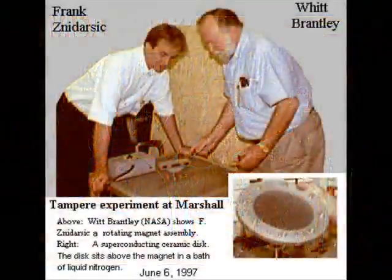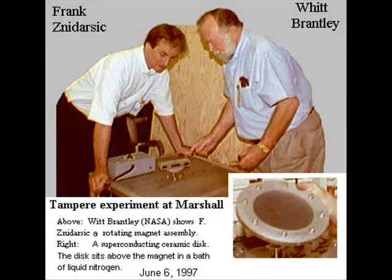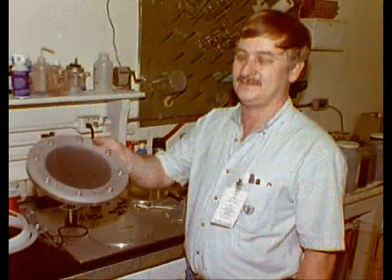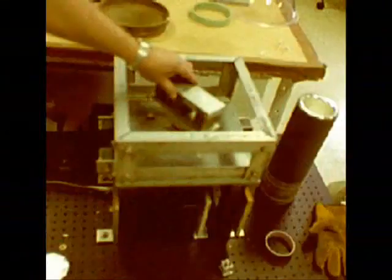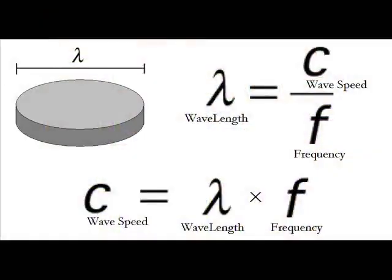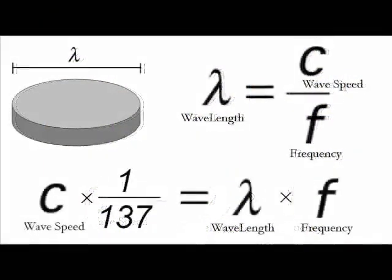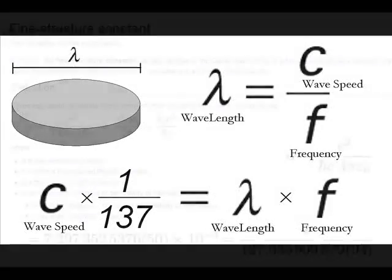Frank Zanardzik, who's an electrical engineer and physics hobbyist, was also in the laboratory at Marshall Space Center when the experiments were performed. The key piece of the puzzle that was missing from David Noever's earlier attempts was finding the proper stimulation frequency. Frank was the first to notice that when you multiply this frequency by the dimension of the disk, you get a velocity which is approximately 1 over 137 times the speed of light.